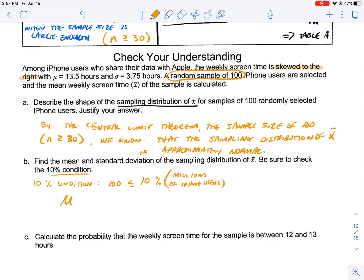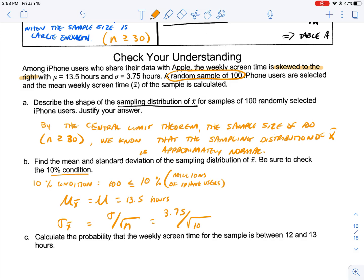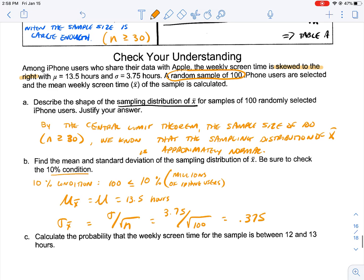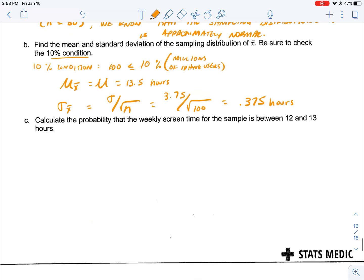So, we can use our standard deviation formula, which would mean that our mean of x-bar is equal to our population mean, which is 13.5 hours. And our standard deviation of x-bar is going to be equal to our standard deviation adjusted for our sample size, which would mean that we'd have 3.75 divided by the square root of 100, which is 10, which would give us 0.375 for our standard deviation, and that's in hours. So, just like that, we've adjusted our standard deviation for our sample size.